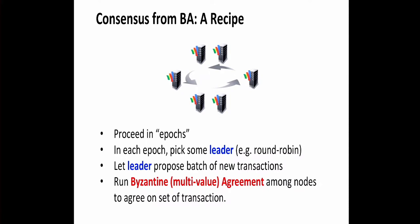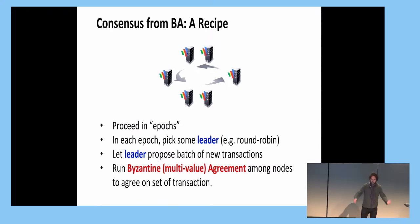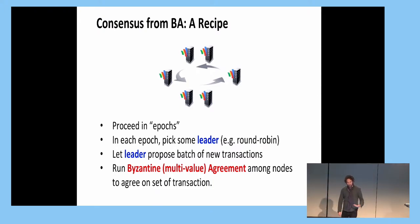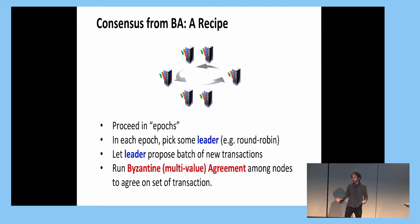Let me go over the general principle for getting consensus protocols. Most of them follow the following simple recipe: we have a protocol that proceeds in epochs. In each epoch, we select some leader — think of it as round robin, so first the first node goes, then the second, and so on. This leader gets to propose any batch of new transactions.